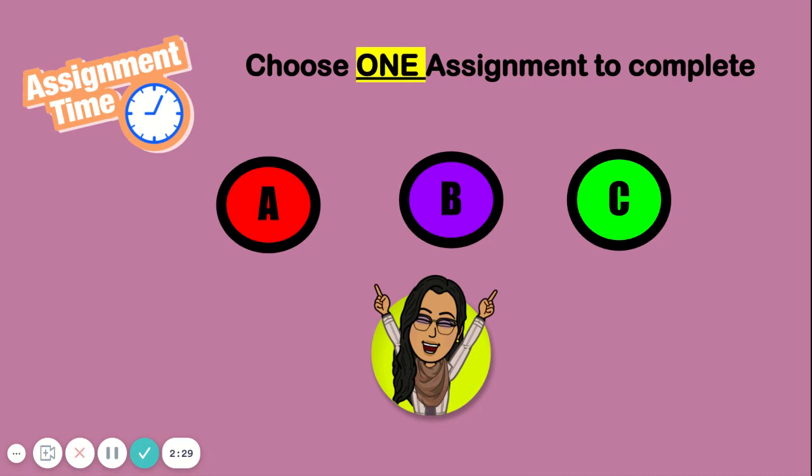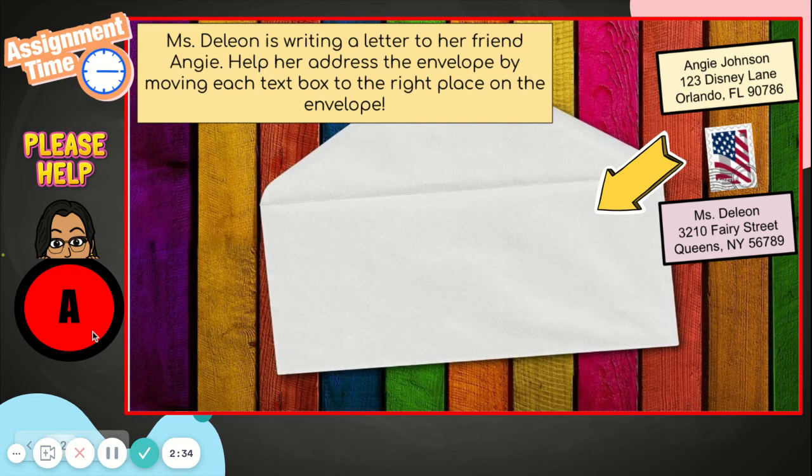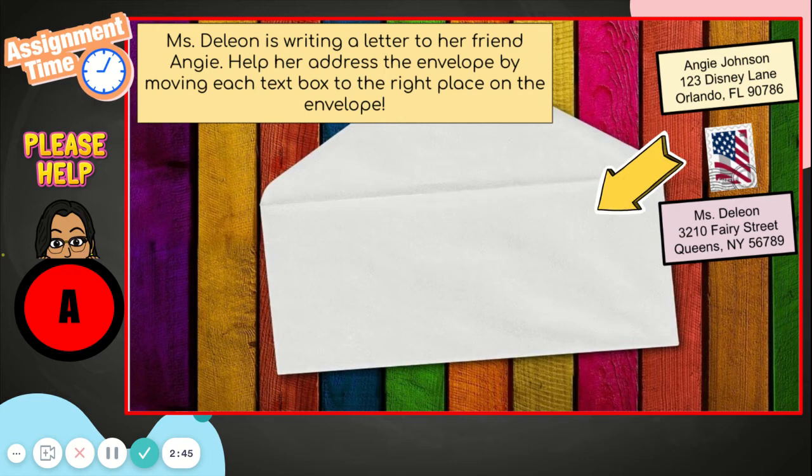Today for your assignment you have three choices — make sure you choose one. Option A: I need to send a letter to my friend Angie, and Angie lives all the way in another state. Help me address my envelope by copy and pasting or dragging the return address or the recipient address onto the front of the envelope. Don't forget the stamp — where do these addresses and stamp go?